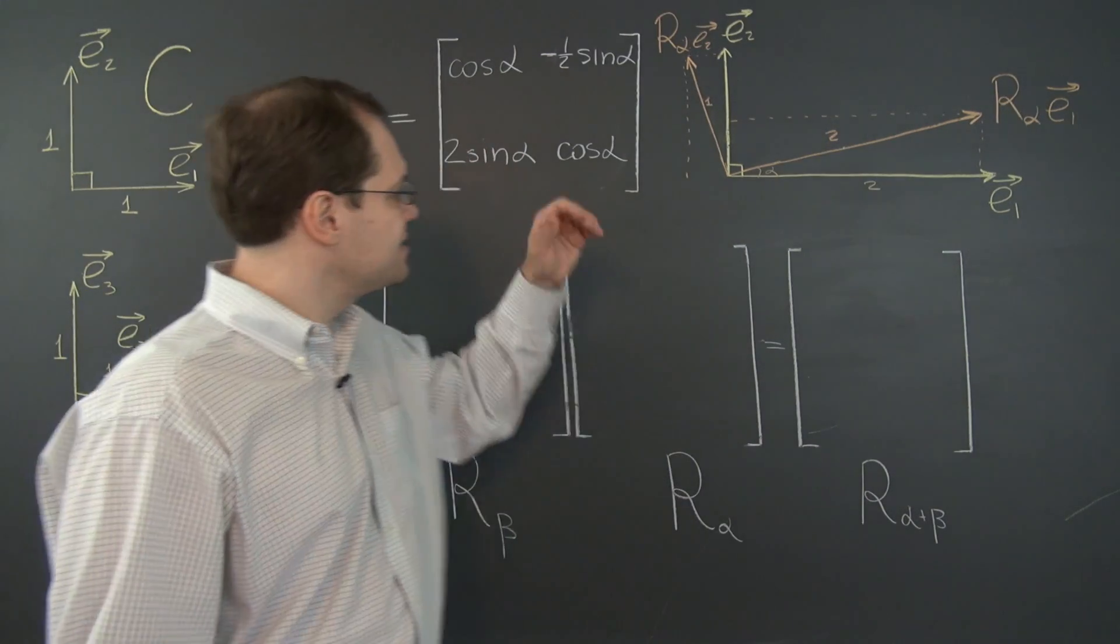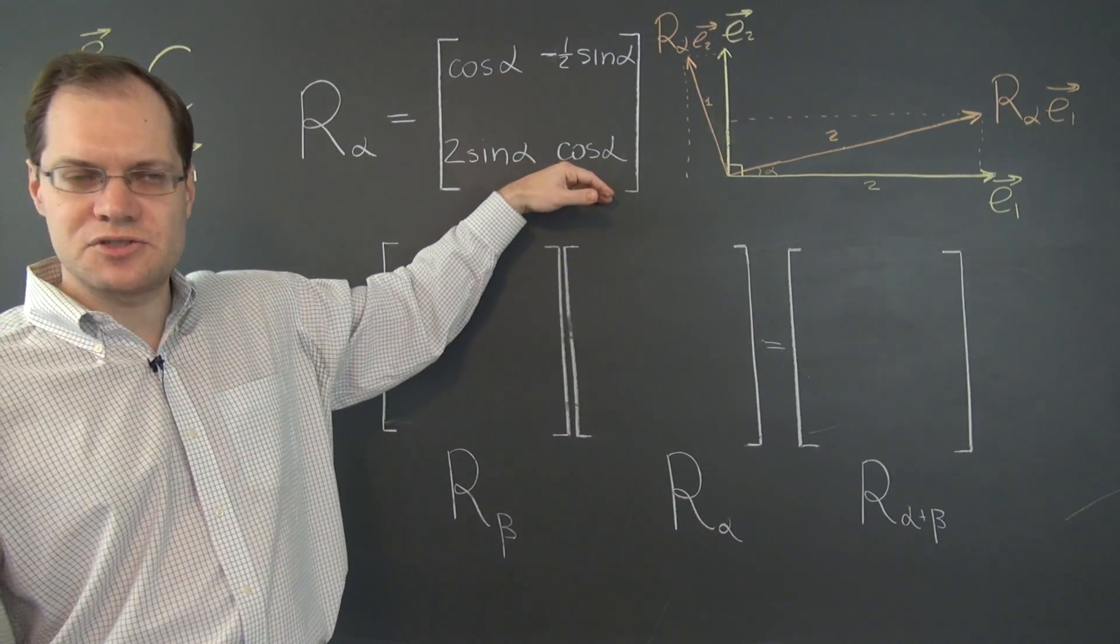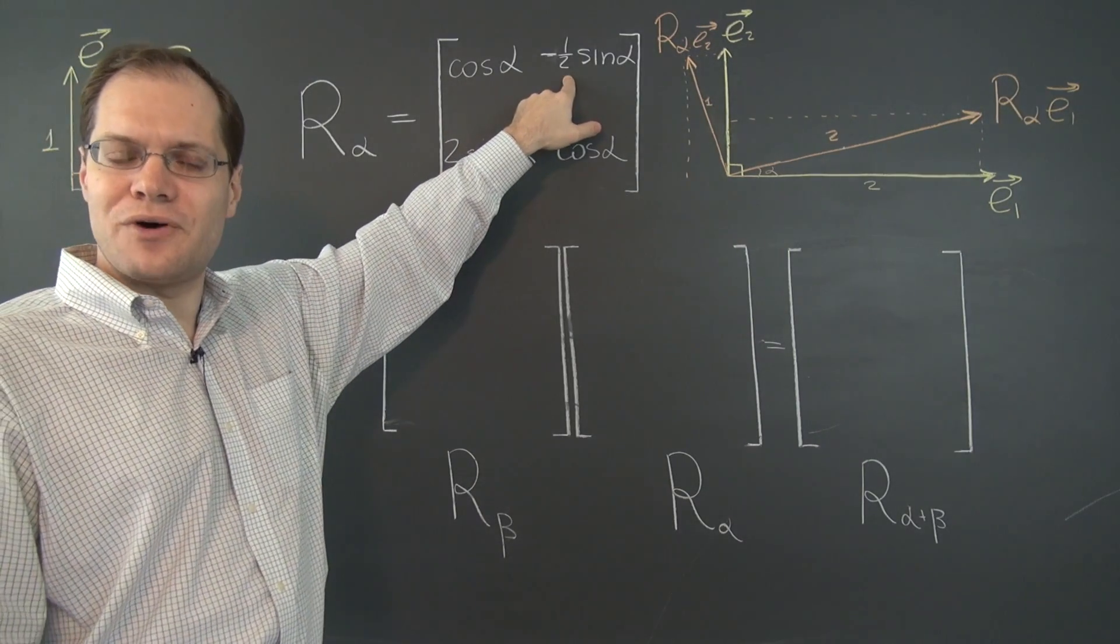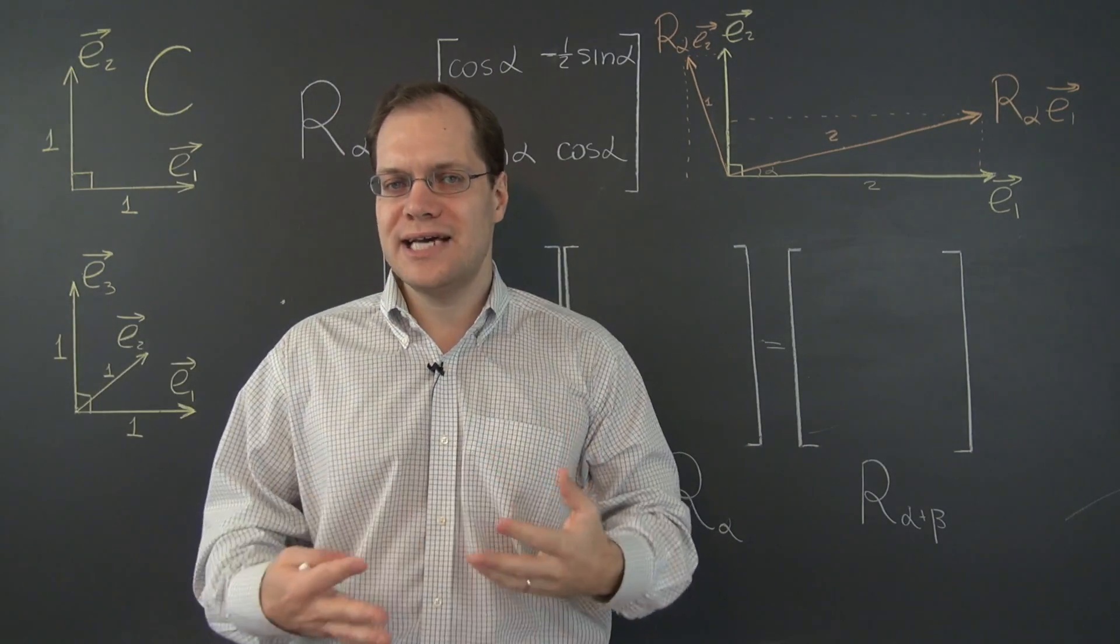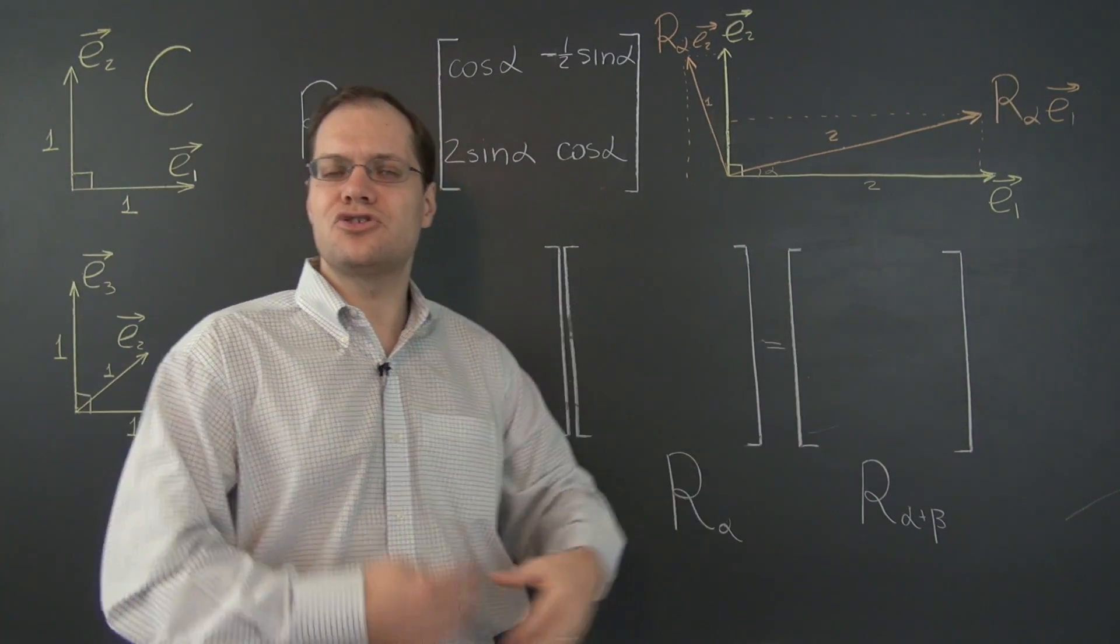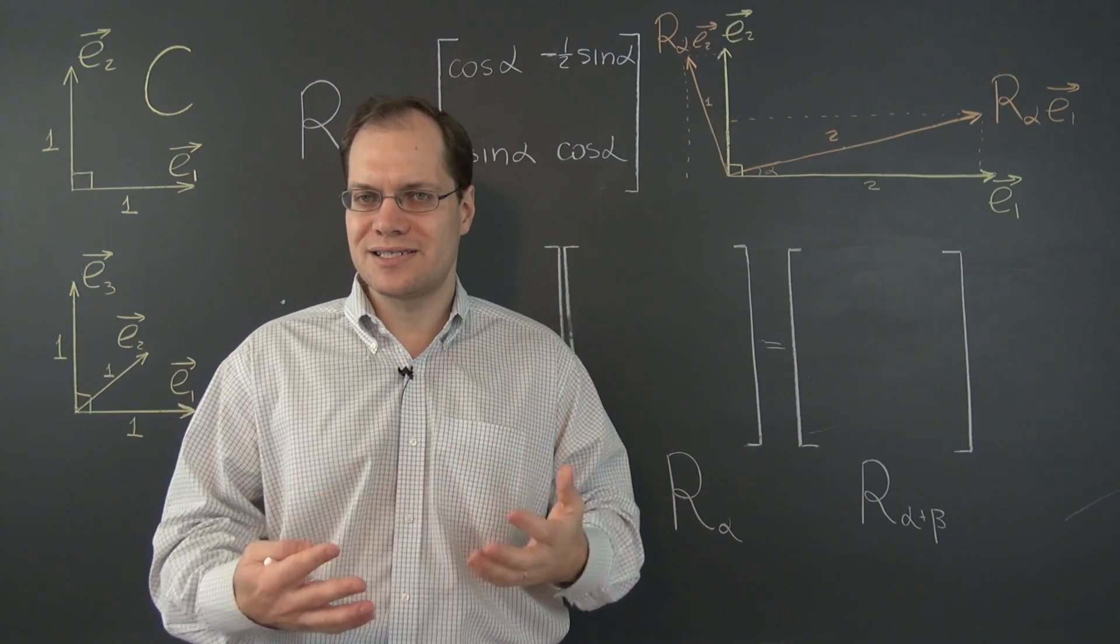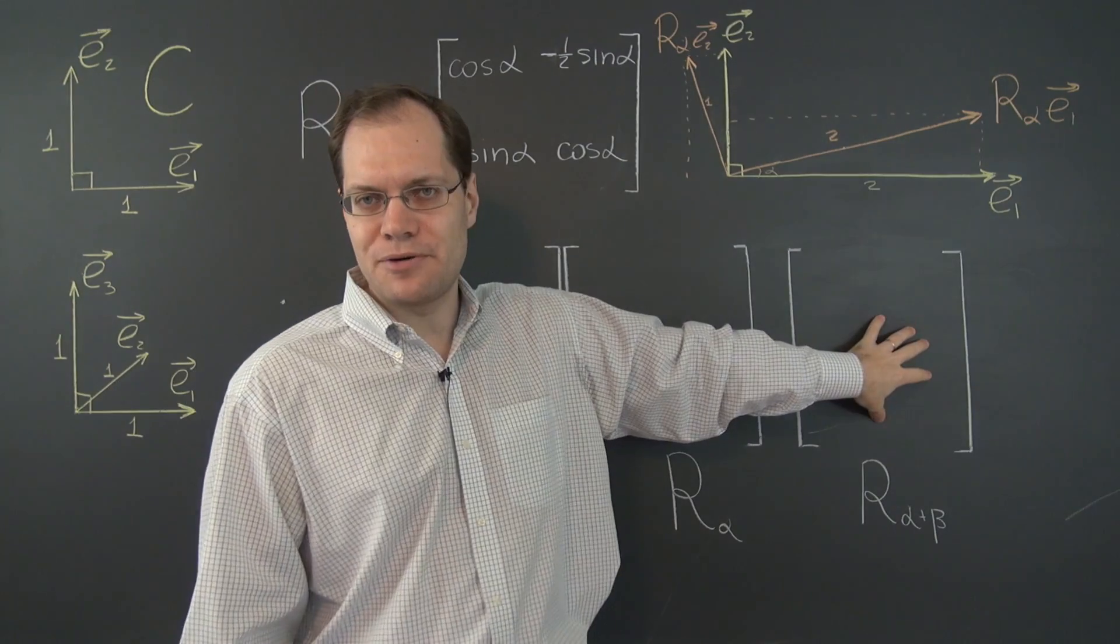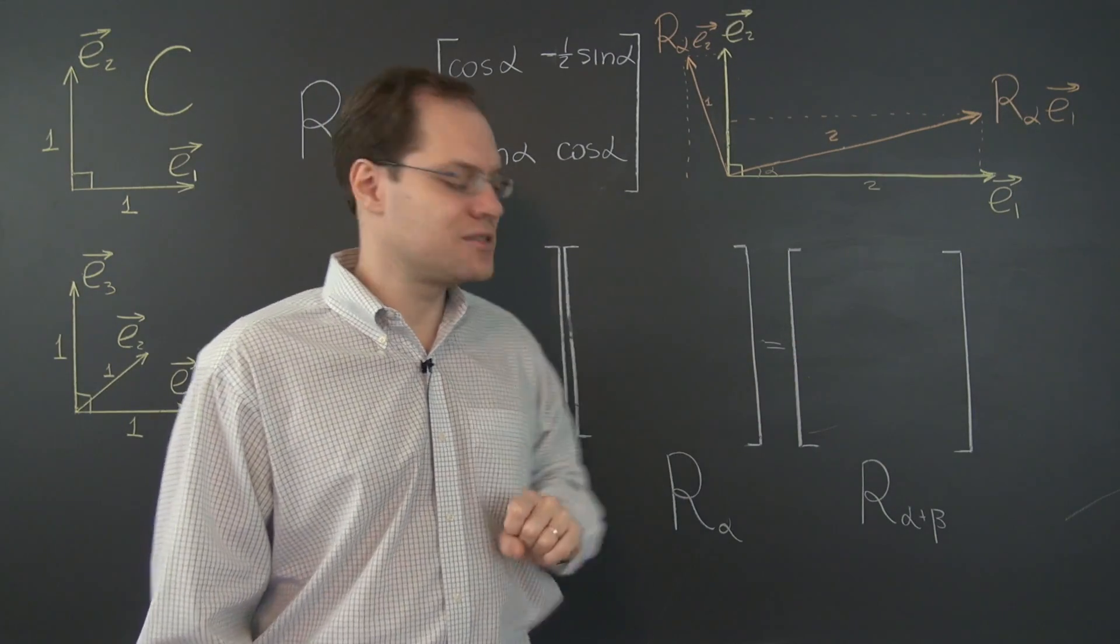We have a matrix that's very similar to the matrix we had before except now we have a 2 here and a negative 1 half here. So I think the property that we would doubt the most is that this continues to work out. Because there are just too many 2s and 1 halves mixed in. It would be interesting to see exactly how this property works out. So let's start with that.